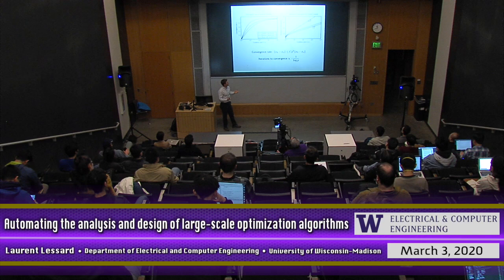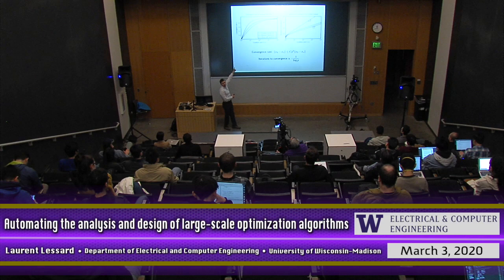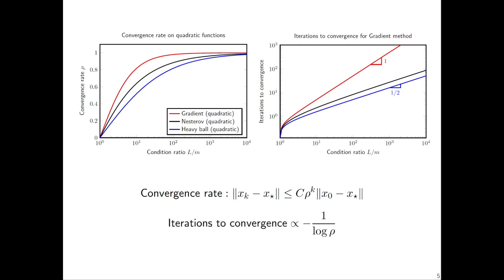The slopes on the log-log plot are one-half for the two accelerated methods and one for the gradient method. It's been shown that if you're only using a first-order method with gradient information over strongly convex functions, you can't do better than a slope of one-half. So these are essentially the baselines we can expect from these kinds of methods.